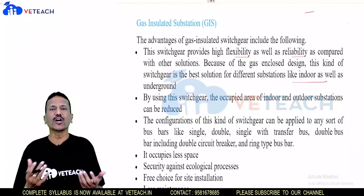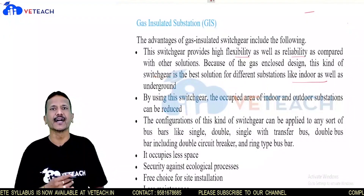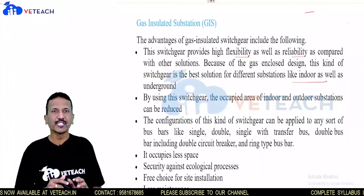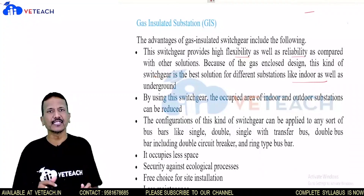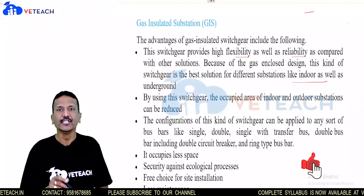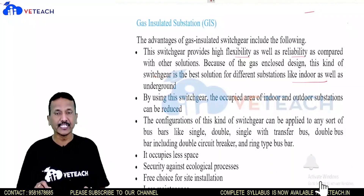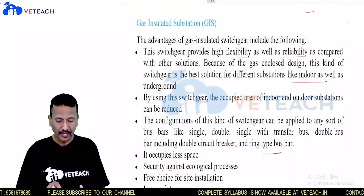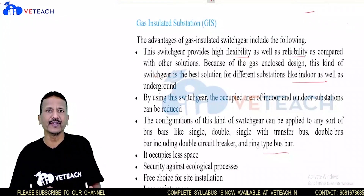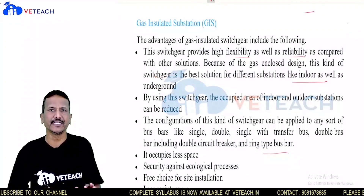This type of switchgear can be applied to any sort of bus bar configuration. A bus bar is the connection point for incoming and outgoing supply lines. We have different types of bus bar connections: single, double, double bus bar, double circuit, and ring type. Ring type is an interconnected system between two systems.